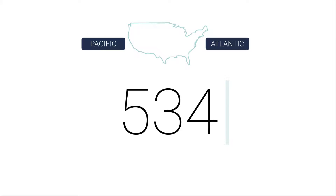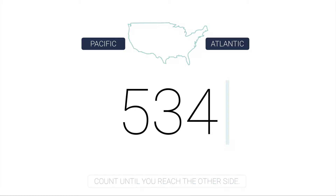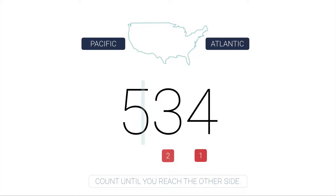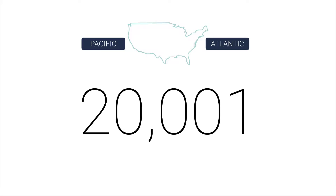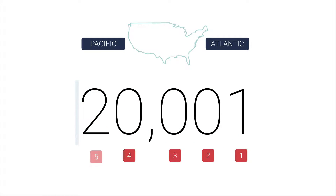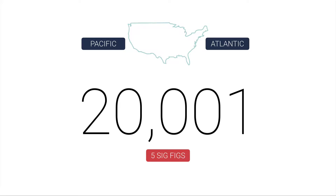Let's take 534 as our first example. Is there a decimal point present? No, it's absent, so we start on the Atlantic — the right side — and count from the first non-zero digit until we reach the other side: one, two, three. There are three significant figures. Now try 20,001 — again, no decimal point, so we start on the right side and count: one, two, three, four, five. Once we begin counting, we don't stop until we reach the other side, whether it's a zero or not.